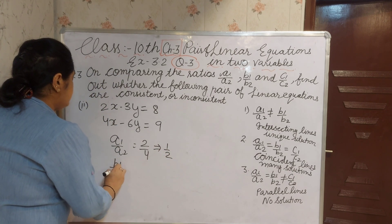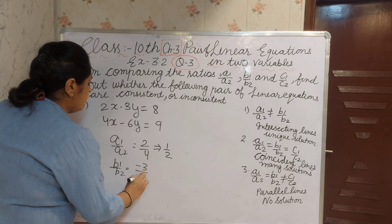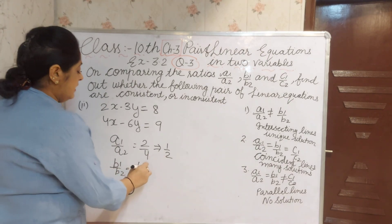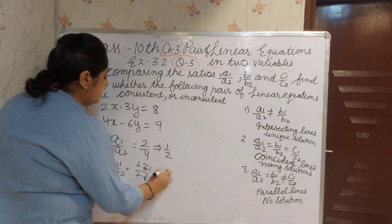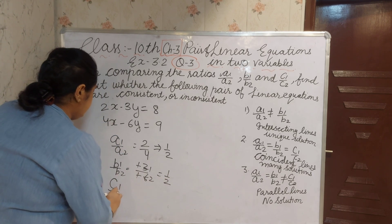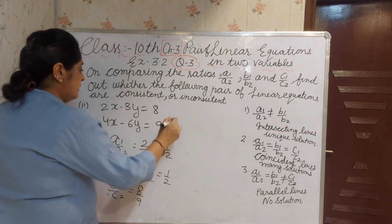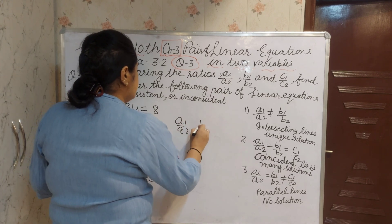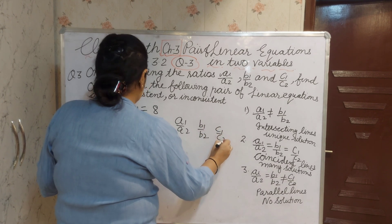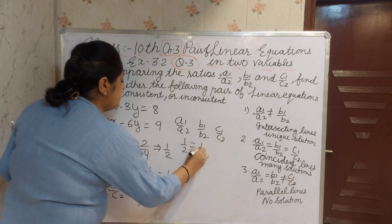Now B1 by B2: minus 3 upon minus 6. Minus and minus will cancel, and reducing the term 3 ones and 3 twos, you will get 1 by 2. Now C1 by C2 is 8 by 9. So A1 by A2 equals B1 by B2.